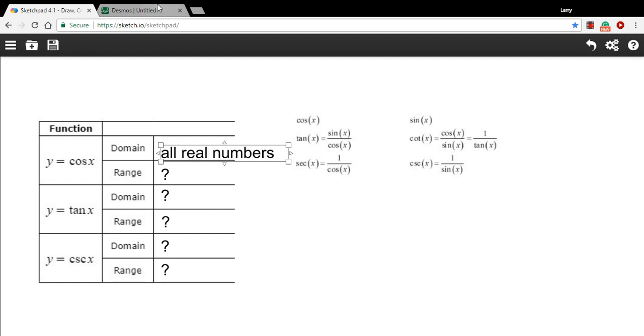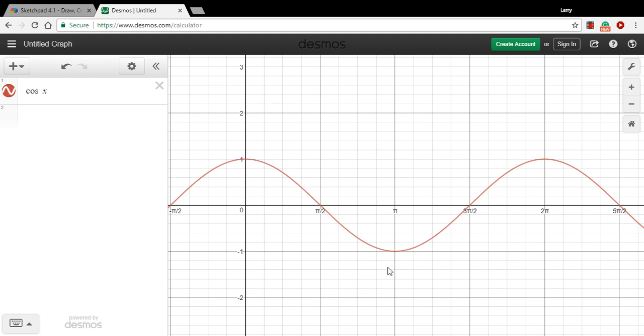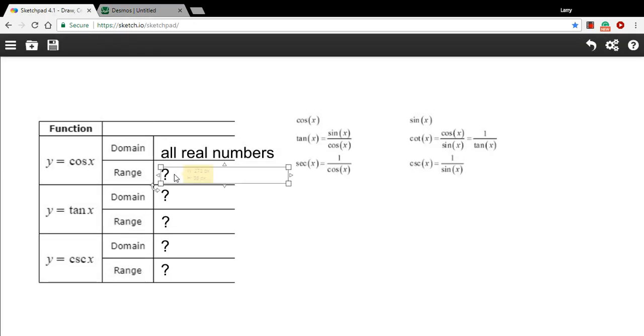How about the range? Well, the range is all the y values. And you can see it gets up to 1, and it goes down to negative 1, and it covers everything in between, but nothing above or below that. So this is going to be everything between 1 and negative 1.